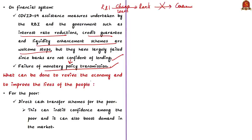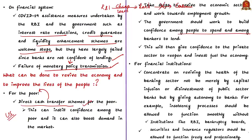The question is: what can be done to revive the economy? Firstly, the authors suggest that the government should look towards direct cash transfer schemes for poor people, citing the example of the US, where unemployed citizens are given direct money by the government. When money is put directly in poor people's hands, demand will rise. Along with this, the government should work to build confidence among people to spend and among banks to lend, which will give confidence to the private sector to reopen and invest, and automatically the economy will rebound.